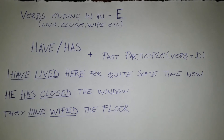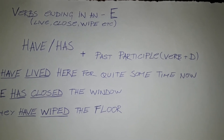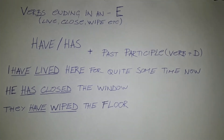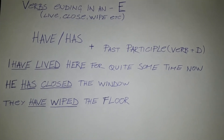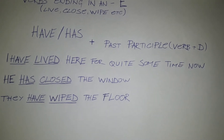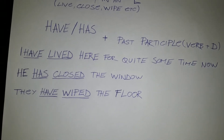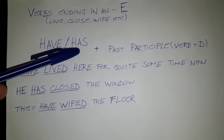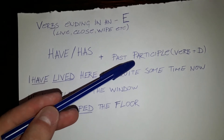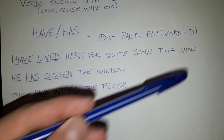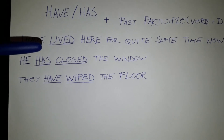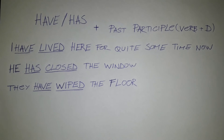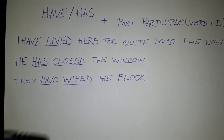Now we need to pay extra attention to the verbs that end in -e, such as live, close, or wipe. For these verbs, we use the auxiliary verb to have and the past participle, but the past participle is made by simply adding a -d to the verb. So have/has plus past participle, verb plus -d. For example: I have lived here for quite some time now. He has closed the window. They have wiped the floor.